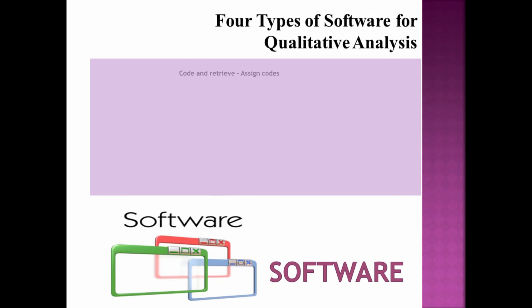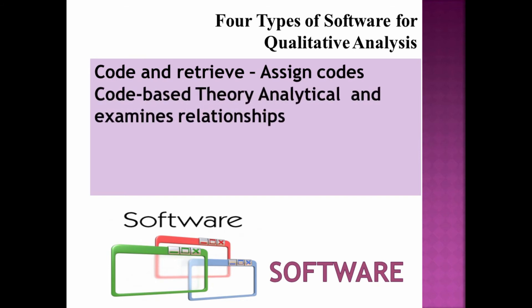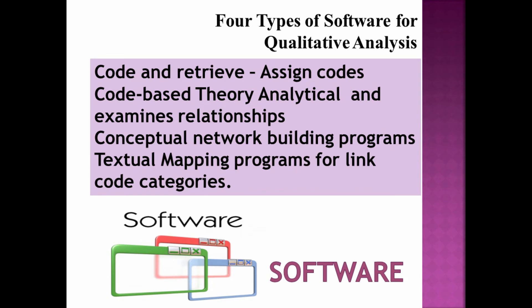Then there are those types of software that are specifically made for qualitative analysis. There are four types. First is code and retrieve programs which assign codes to text. Next is code based theory programs which allow researchers to analyze relationships between the data, codes and code categories. Conceptual network building programs and textual mapping software allows for linking various aspects of the code categories.